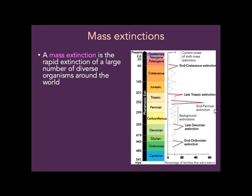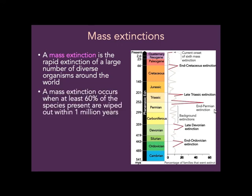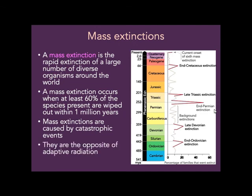Mass extinction is kind of the opposite of an adaptive radiation — it is the rapid extinction of a large number of diverse organisms around the world. We say a mass extinction occurs when at least 60% of the species present are wiped out within 1 million years. Mass extinctions are caused by various catastrophic events. There have been 1, 2, 3, 4, 5, maybe 6 mass extinctions on Earth.